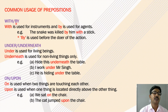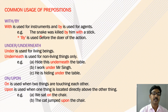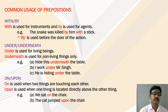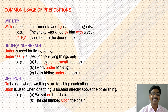The prepositions 'with' and 'by': 'with' is used for instruments and 'by' is used for agents. For example: the snake was killed by him with a stick — 'by' is used before the doer of the action. The prepositions 'under' and 'underneath': 'under' is used for living beings and 'underneath' is used for non-living things only. For example: hide this underneath the table; I work under Mr. Singh; he is hiding under the table.